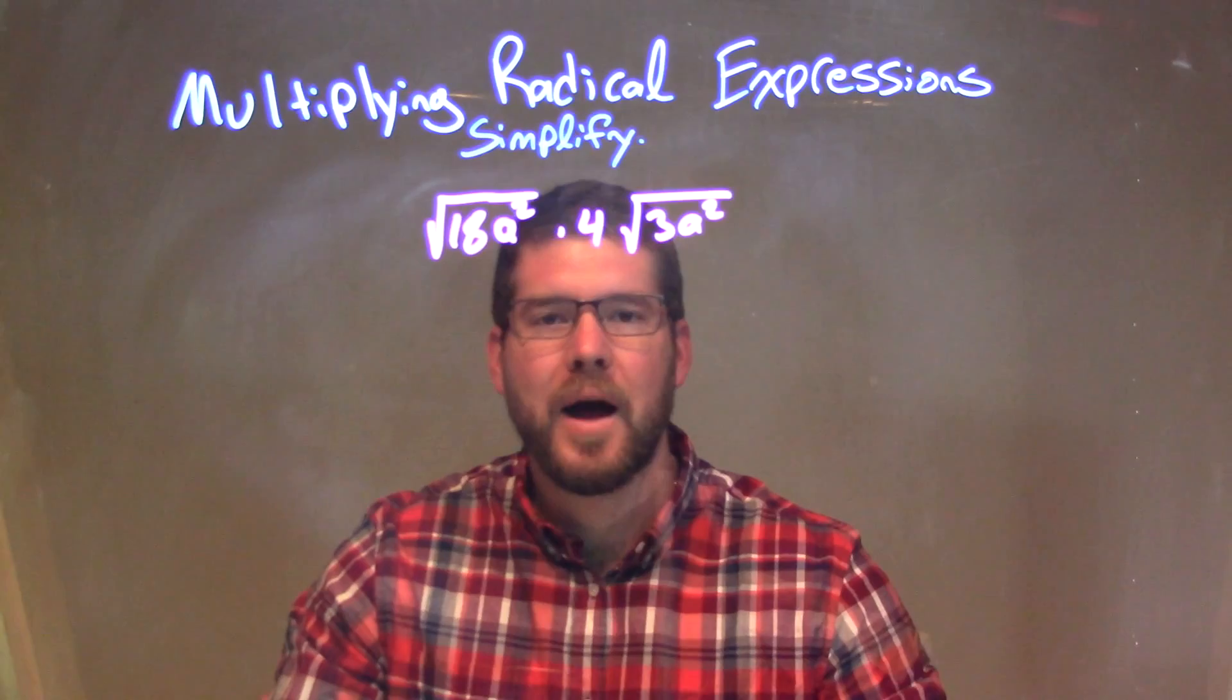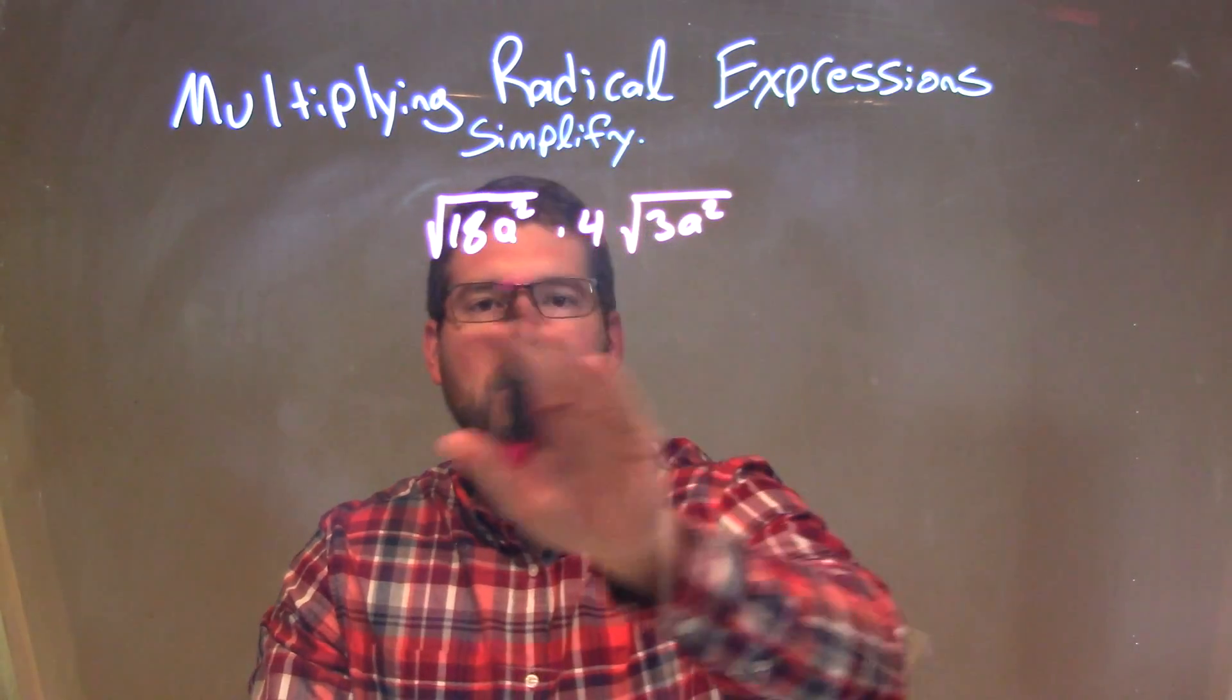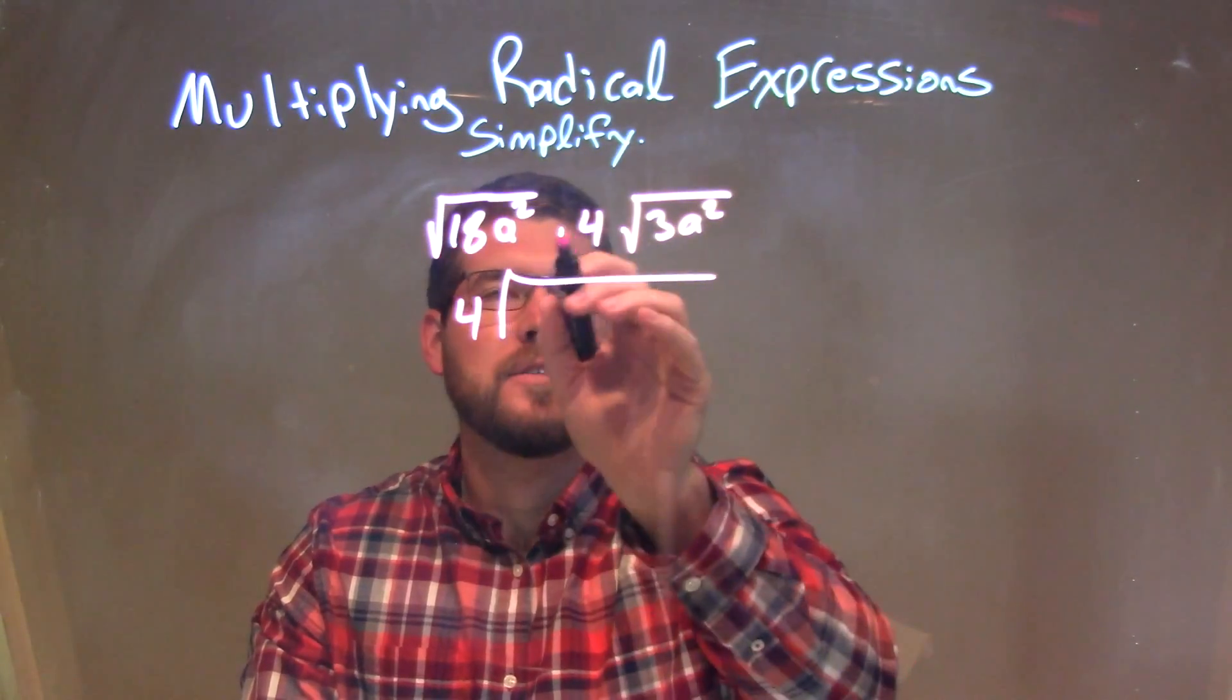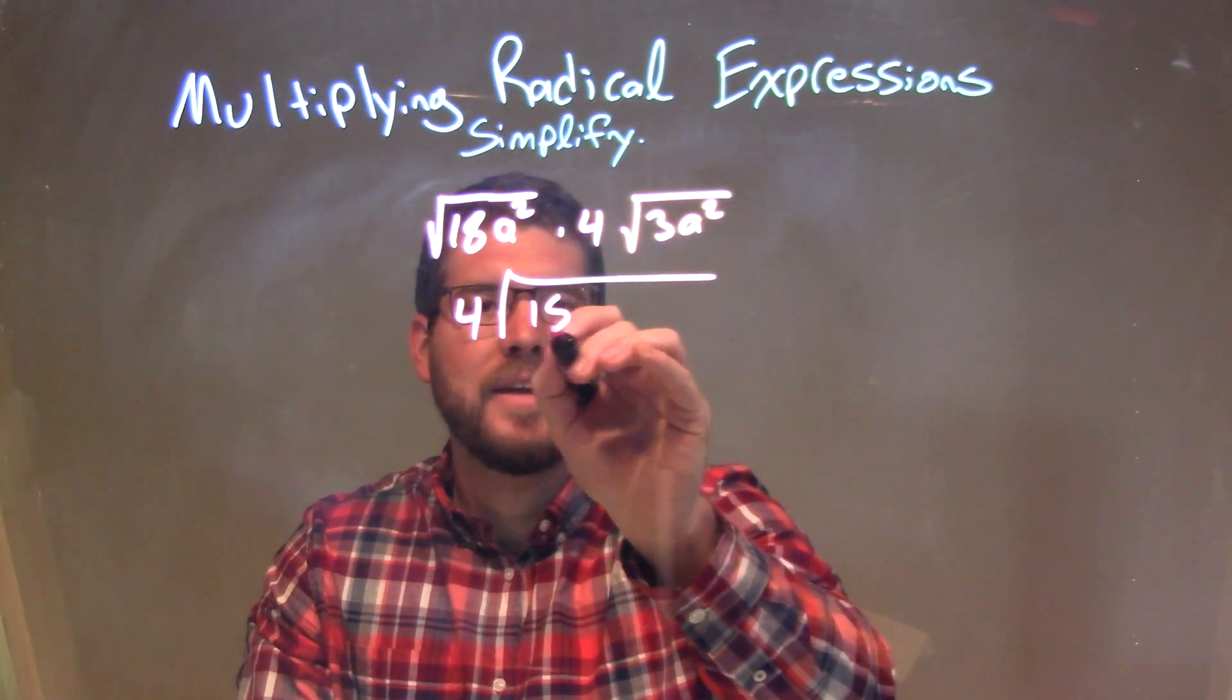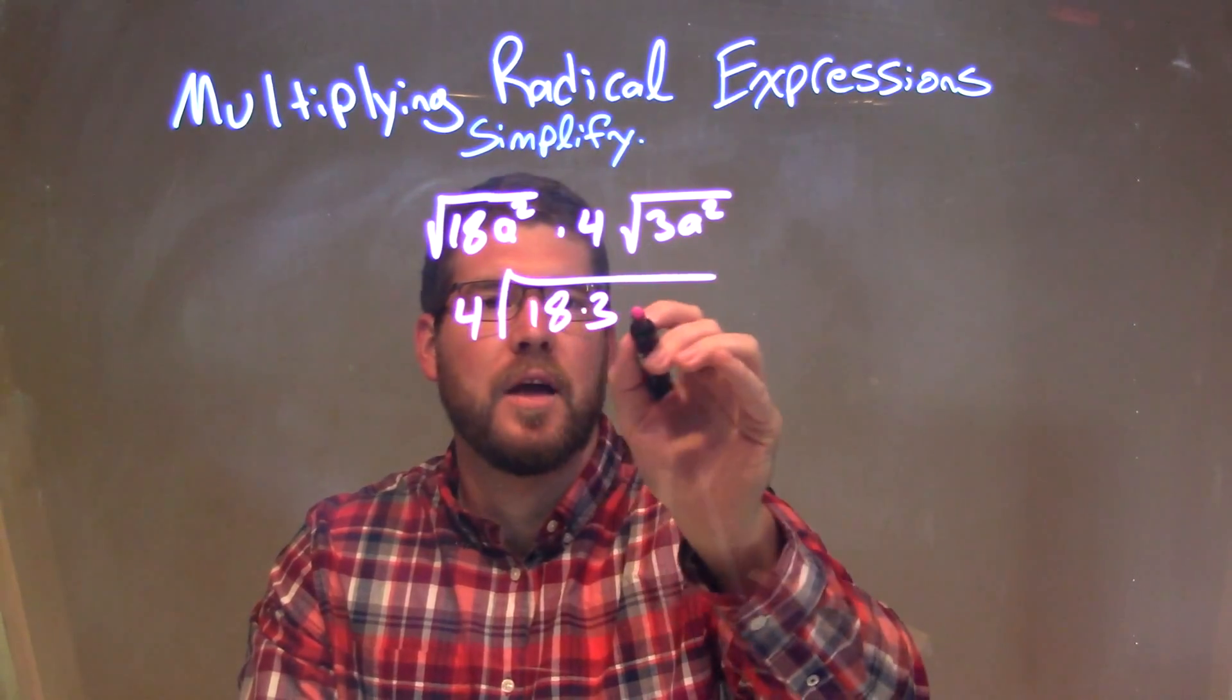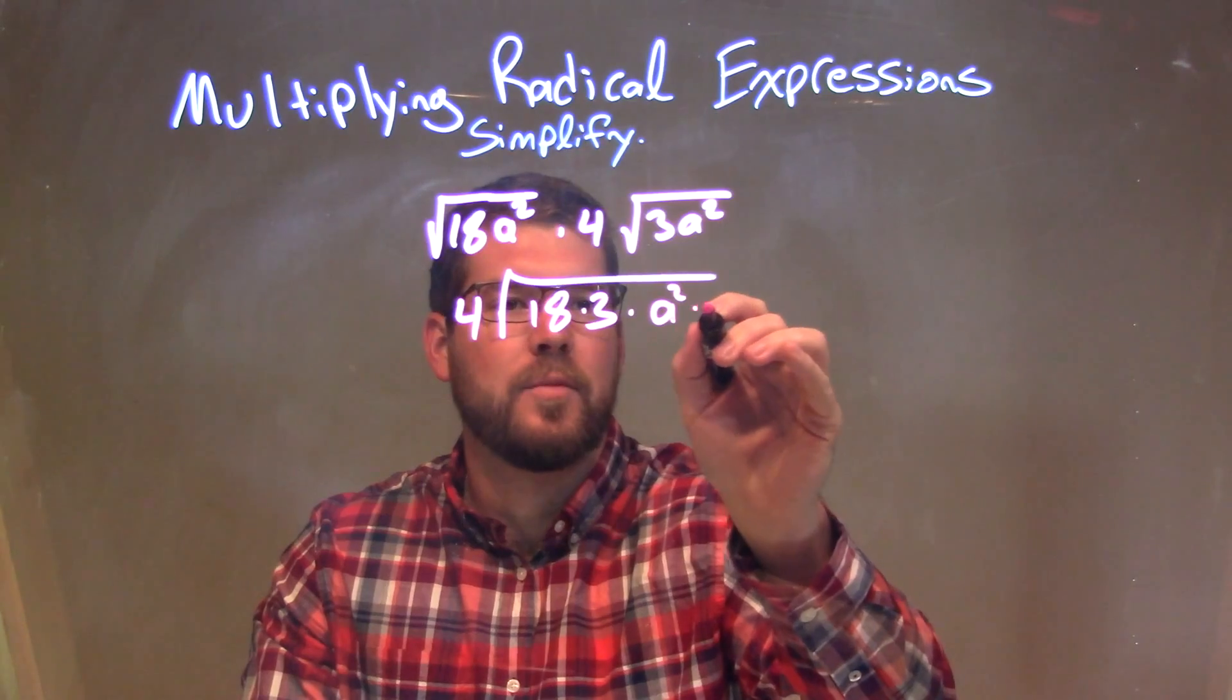What I'm going to do here is combine this to be one big square root. The 4 still comes out front. This square root here, since it's still being multiplied, we can do that. We have 18 times 3, times a² times a².